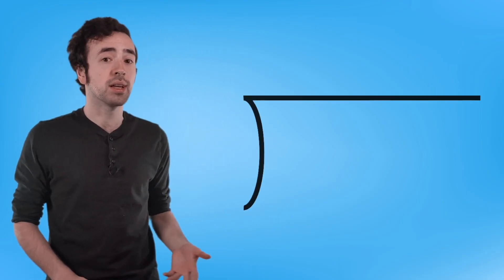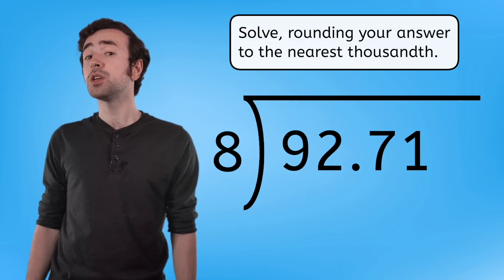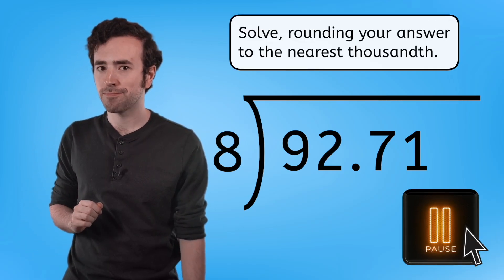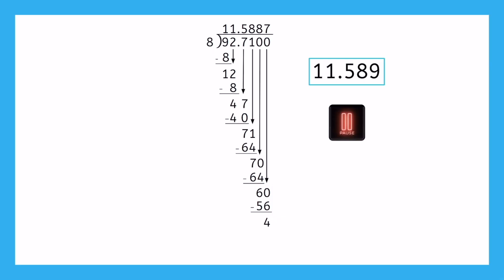Let's take a moment to review what we've already learned about dividing decimals. Let's use the equation 92 and 71 hundredths divided by 8. Go ahead and solve this warm-up division equation, rounding your answer to the nearest thousandth. Because we're rounding to the thousandths place, we can stop dividing when we get to the ten thousandths. After rounding, our answer is approximately 11 and 589 thousandths. Feel free to pause here if you'd like to compare your work to what's on screen.